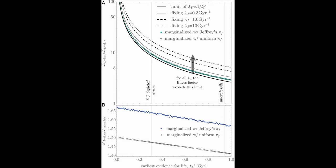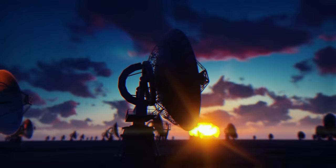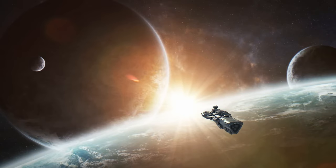Kipping ha infatti considerato quattro possibili scenari. Il primo: la vita è comune e spesso sviluppa intelligenza. Il secondo: la vita è rara ma spesso sviluppa intelligenza. Il terzo: la vita è comune e raramente sviluppa intelligenza. Il quarto e ultimo: la vita è rara e raramente sviluppa intelligenza.